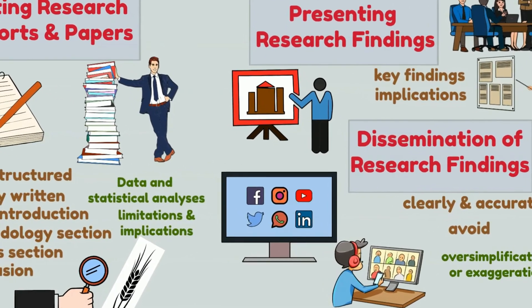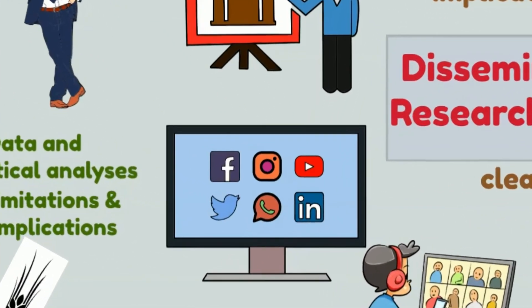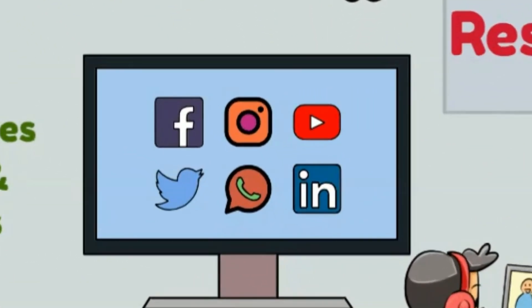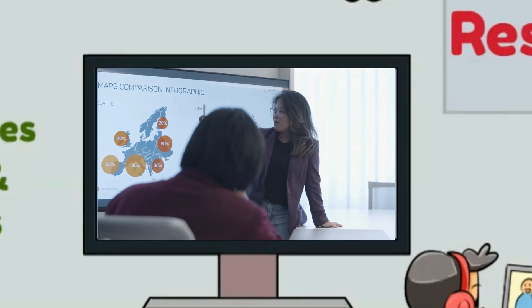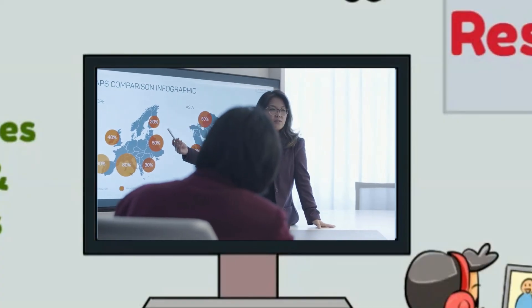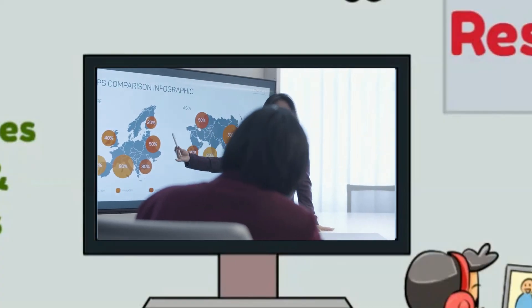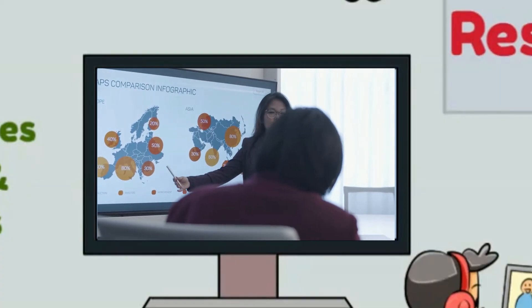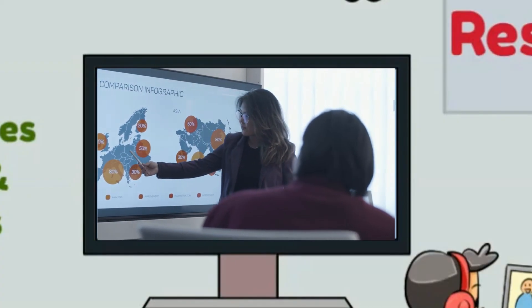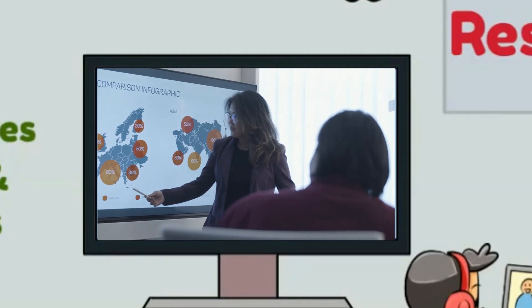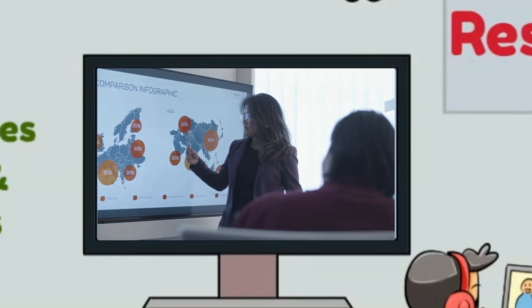For example, disseminating research findings on social media about the benefits of exercise on mental health. The findings are communicated through infographics and short videos to reach a wider audience.